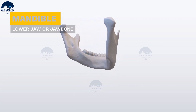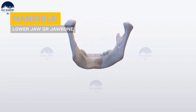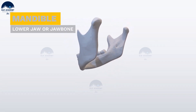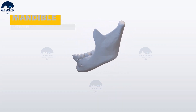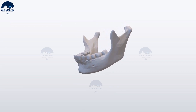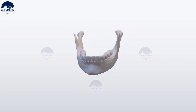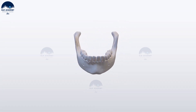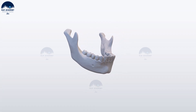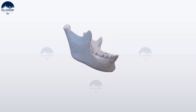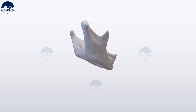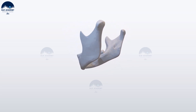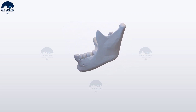The mandible is the lower jaw or jawbone. It forms the lower jaw and holds the lower teeth in place. The mandible sits beneath the maxilla. It is the only movable bone of the skull.